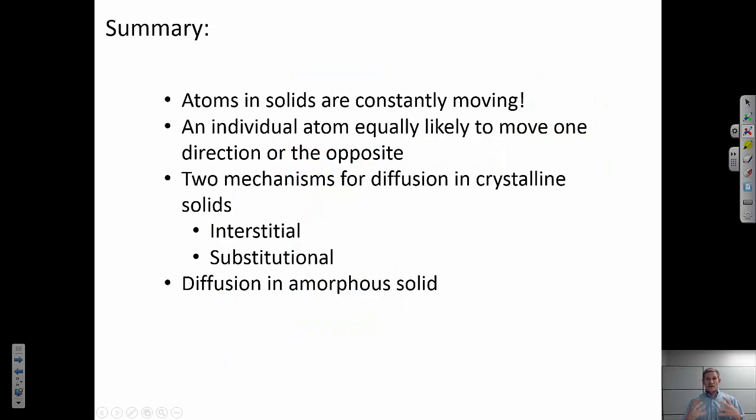Okay, in summary, atoms and solids are constantly moving. That's what allows them to diffuse around. Individual atoms are going to be equally likely to move in one direction or another. We talked about two mechanisms, interstitial and substitutional. Substitutional requires a vacancy for this mechanism to happen. For this substitutional atom to diffuse from one site to another, there needs to be a vacancy on that site. Finally, we talked about diffusion in amorphous solids, and it certainly happens, but we don't refer to it in terms of these terms, because those are specifically referring to a material that's on a fixed crystal lattice.